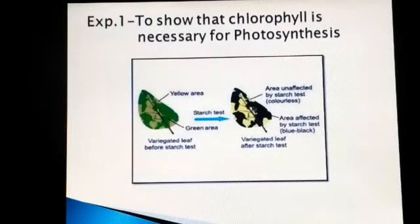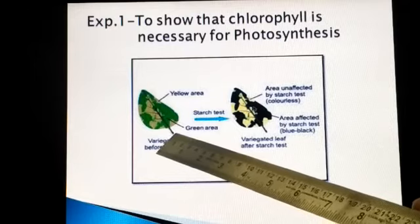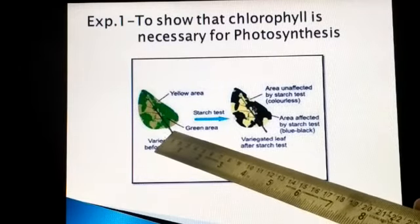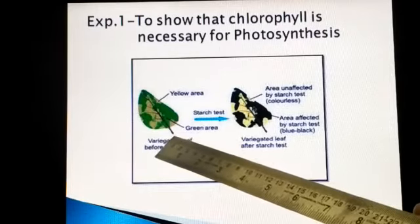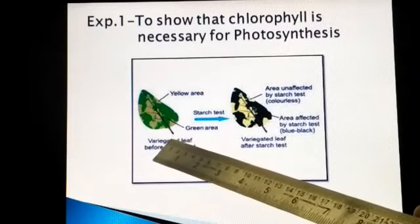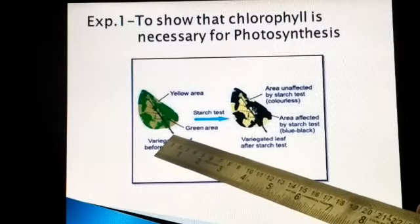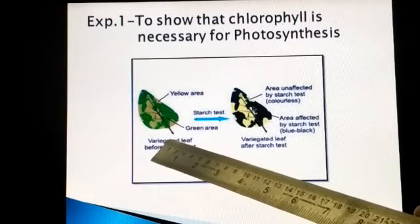Let's start with the first experiment: to show that chlorophyll is necessary for photosynthesis. Here is a variegated leaf — variegated means a leaf which has different colors apart from chlorophyll-containing cells. We see green color and some brown color. Examples of such plants are coleus, in which we see brown, red, maroon, and yellow colors apart from green.